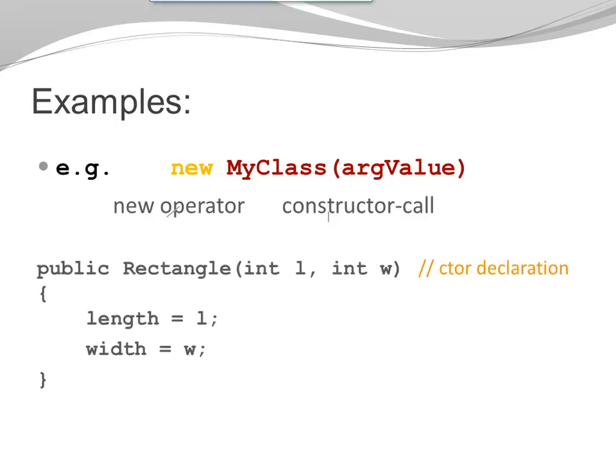Here is another example. Once again, we use the constructor declaration we introduced before. This time it is rectangle. We have two parameters declared, both of type integer. We used both parameters to initialize the fields.